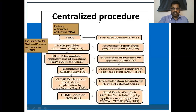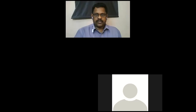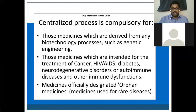Some medicinal preparations must go through the centralized procedure — it is compulsory. In that list we have cancer drugs, drugs for the treatment of AIDS, diabetes, orphan medicines for rare diseases, and autoimmune diseases. All these drugs must be approved through the centralized procedure only. That is the rule followed in the European Union.